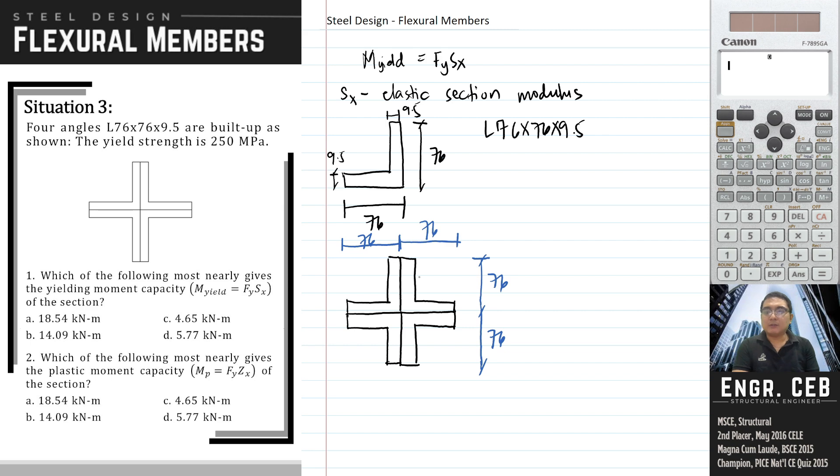As you can see, we can compute the moment of inertia of this angle if we consider this as a square with four holes. This is simply a square with four holes.